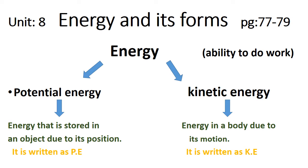We are going to start with unit number 8, energy and its forms, page number 77. Energy is basically described as the ability to do work. There are two types of energies: potential energy and kinetic energy. In the previous lesson we discussed about potential energy in detail — it is energy stored in an object due to its position. Today we are going to study about kinetic energy in detail.